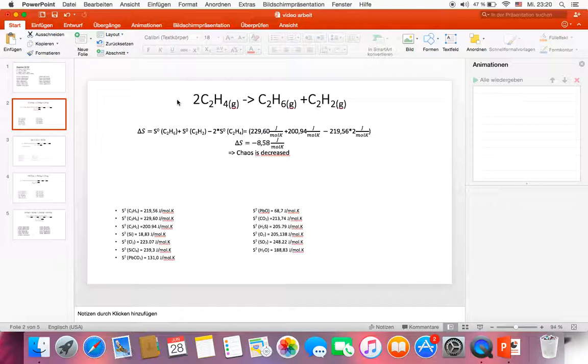So in this case, delta S is equal to the entropy S of the products plus entropy S of the products minus two times entropy S of the reactants. And the amount of delta S is minus 8.58 joules per mole kelvin. The minus sign means the chaos of this reaction is decreased.